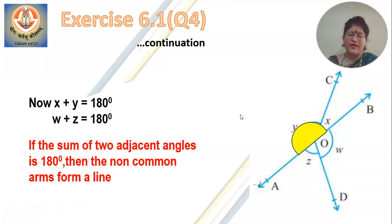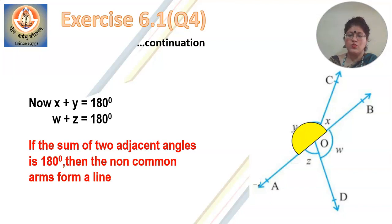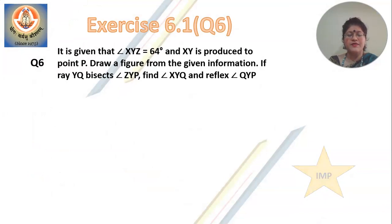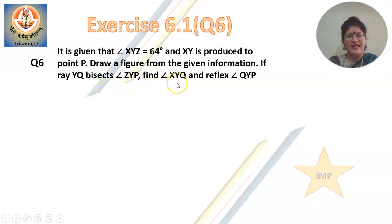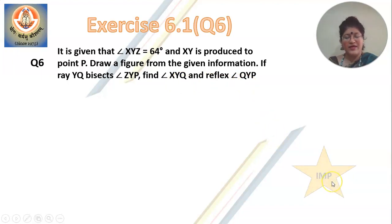Now let us look at another question from exercise 6.1 — that is question number 6. Question number 5, I will be doing later in another video lesson. Another important question: question number 6. It is given that angle XYZ is 64 degrees and XY is produced to point P. Draw a figure from the given information. If ray YQ bisects angle ZYP, find angle XYQ and reflex angle QYP. Write this question in your notebook — it is an important question.